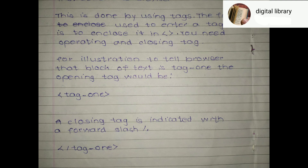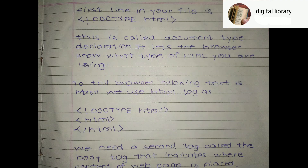So we have two tags: the opening tag and the closing tag. The closing tag has a forward slash, and the opening tag does not. The first line of your file is DOCTYPE HTML — this is called the document type declaration. It lets the browser know what type of HTML you are using, and it is required at the start of every HTML program.